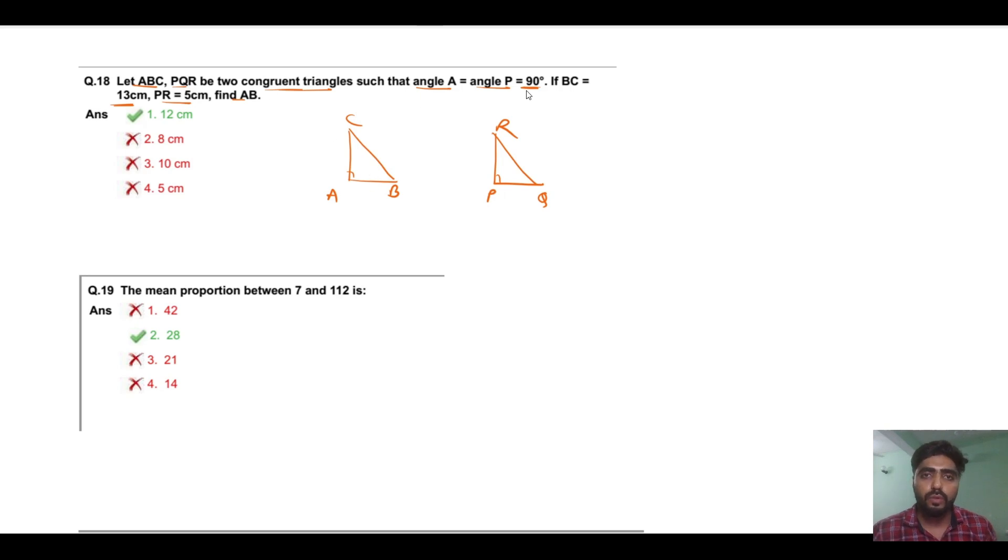So if we're given a side, we can write BC which is 13. PR which is 5, so this is 5. So to find AB, we can use Pythagorean theorem here, or you'll remember the triplet. So 5, 12, 13 - the answer is 12.